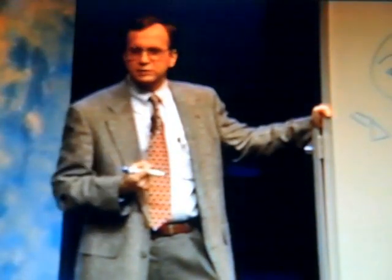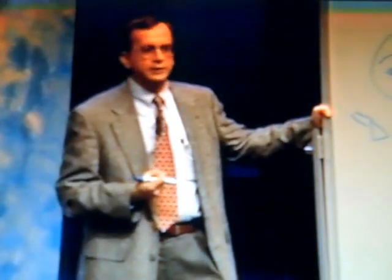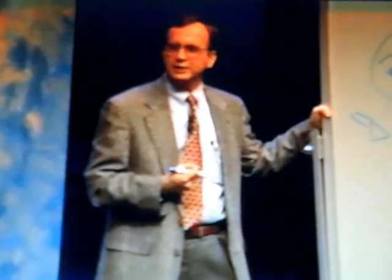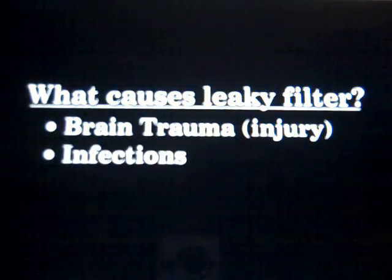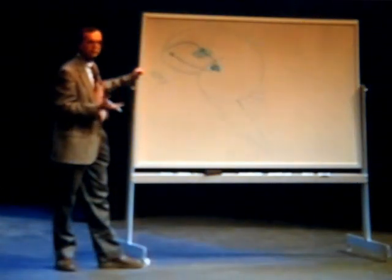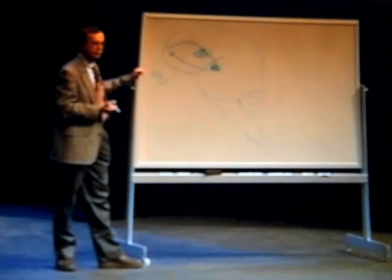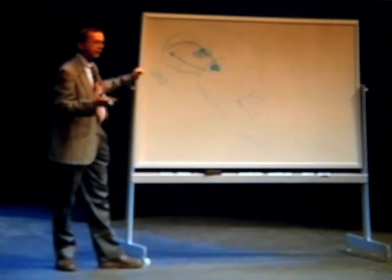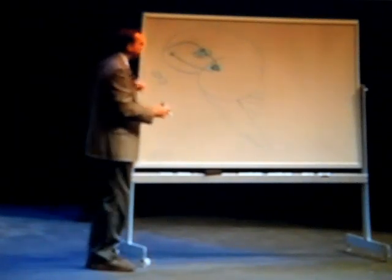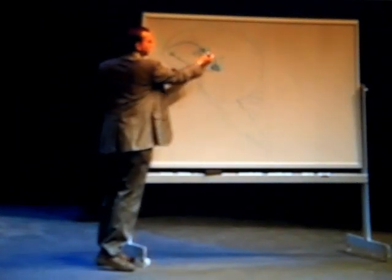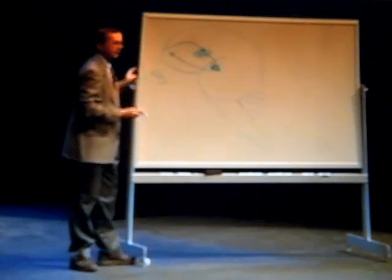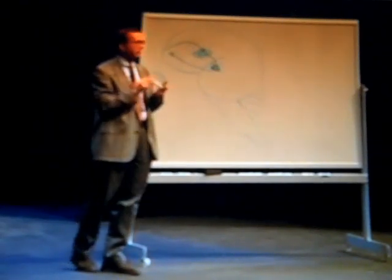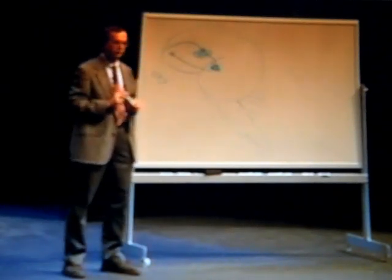One way this is thought to possibly occur in children and adolescents is that they may get certain types of infections. Those infections may trigger the body's response to get rid of the infection — what we call an immune response. There can be confusion in that response so that it not only gets rid of the infection, but it also starts attacking this area here, the basal ganglia, and that response is what punches holes in the filter.